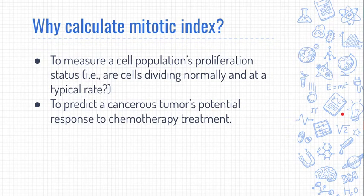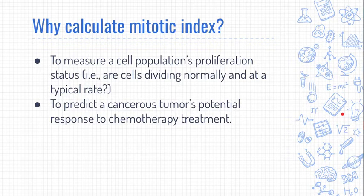So why would we want to calculate mitotic index? Mitotic index gives us information about what's going on in a population of cells. You would expect a part of an organism that's growing to have a much higher mitotic index compared to a part that's not growing. Sometimes in the lab, people look at the root tip of an onion or anything that's growing — you can compare the mitotic index of the growing part to a part that's not growing.